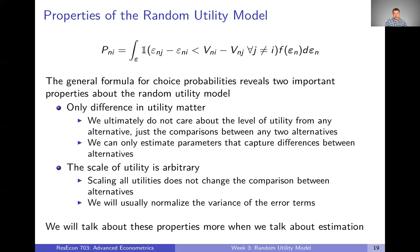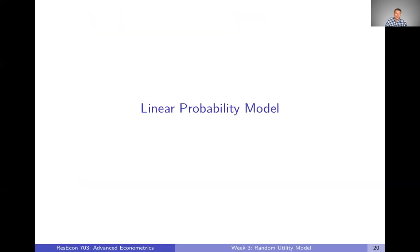The scale of utility is also arbitrary. Suppose magically our decision maker gets twice as much utility from everything — the orderings are still going to be the same. If a certain alternative has the most utility and we double everything's utility, that same alternative still maximizes utility. So everything we estimate is really only going to be estimated up to some scale parameter. Ultimately we're going to normalize variances of error terms — we'll talk about this more next week when we actually talk about the logit model. In the next video, we're going to talk about the linear probability model.